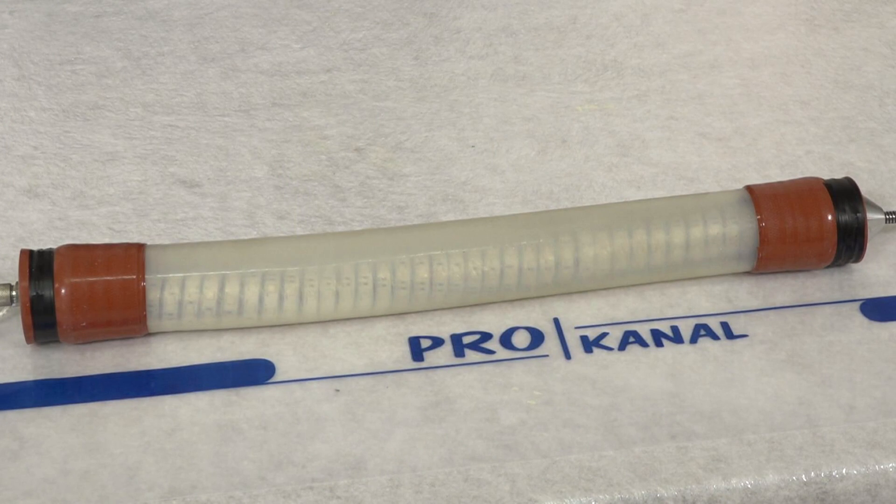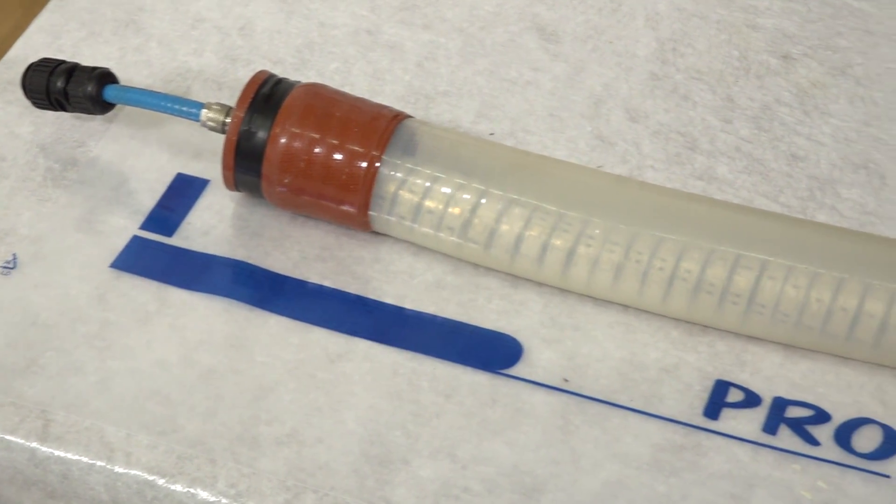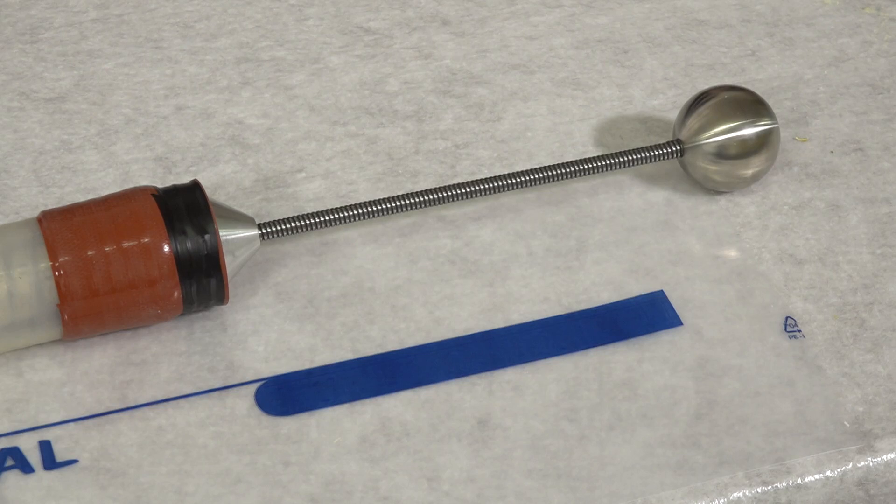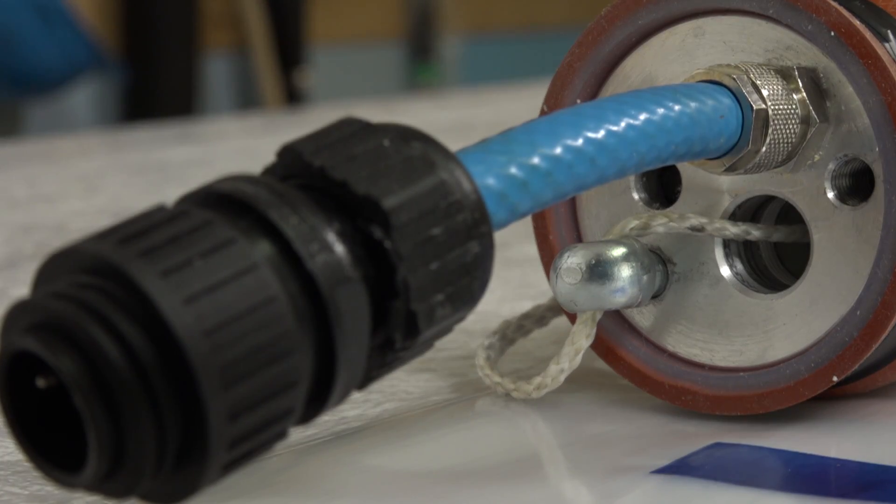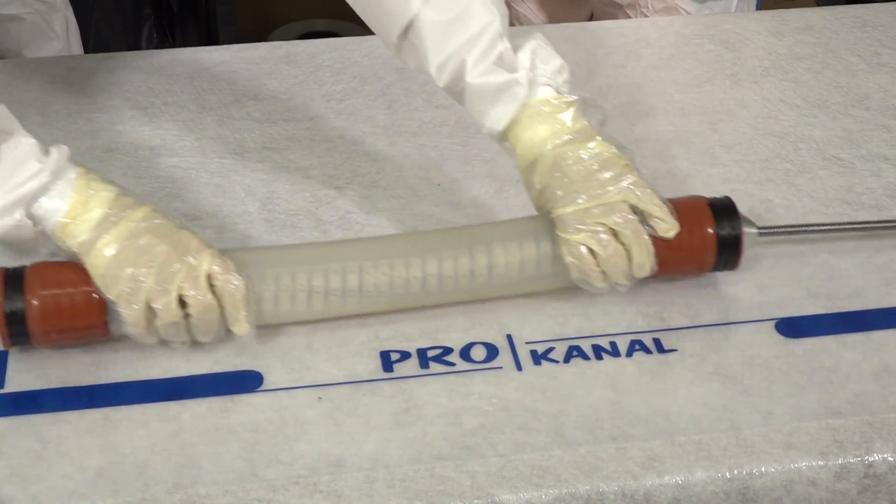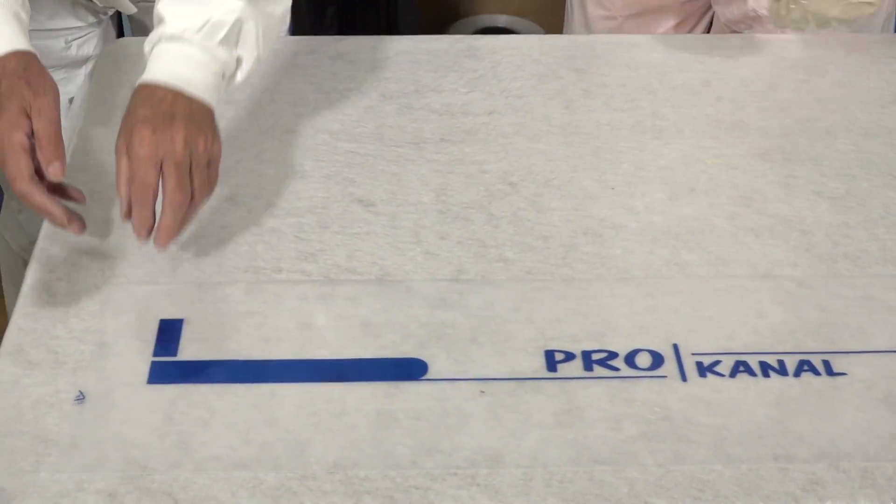Our UV packers are suitable for repair of straight pipes and in conjunction with the patented navigation gauge also for bend repair. The plug connects the UV packer with air and electricity. As our video shows, the use of UV packers is no sorcery.